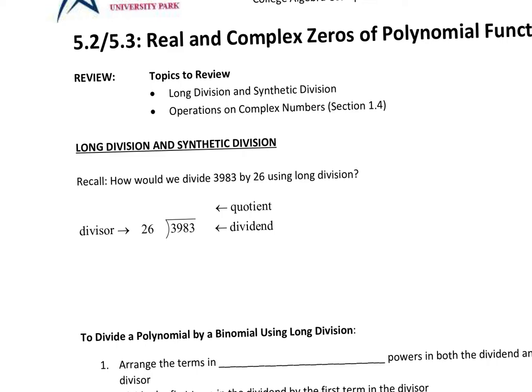Before we start, let's give these formal terms in terms of what we're talking about when we talk about division. The number on the outside is called the divisor. The number on the inside is called the dividend. And we're going to try to find the quotient.